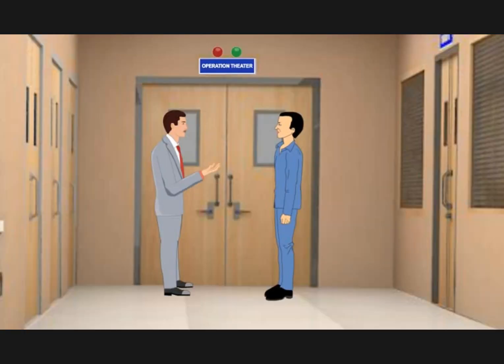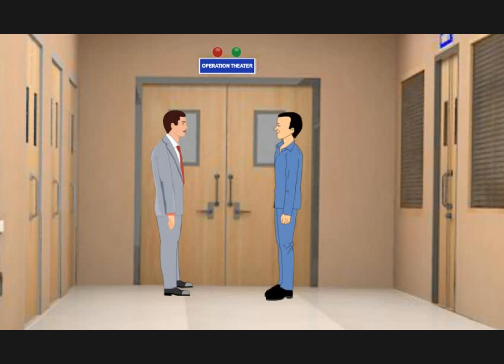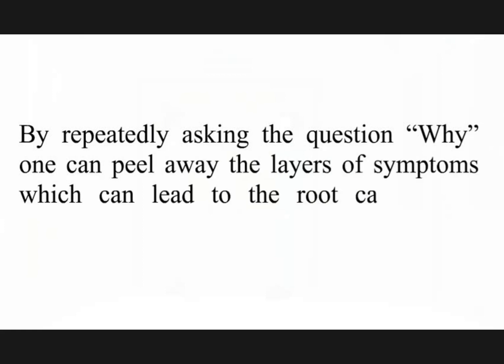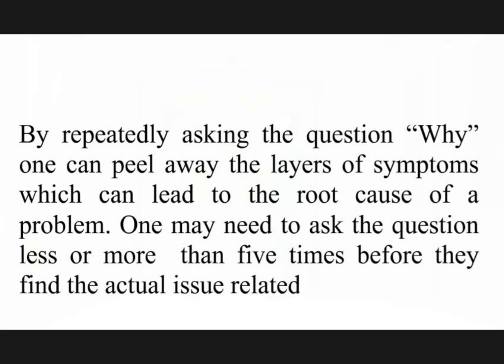A floor manager and ward boy are discussing near the operation theater. Why was the patient brought late to the operation theater? They had to wait for a trolley. A replacement trolley had to be found because the original trolley's safety rail had worn down and eventually broken. The trolleys had not been regularly checked for wear. The root cause is that there is no equipment maintenance schedule. A proper maintenance schedule should be set up to ensure patients are never late due to faulty equipment. By repeatedly asking the question why, one can peel away the layers of symptoms to find the root cause of a problem.